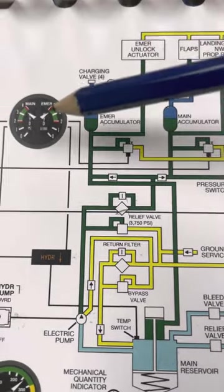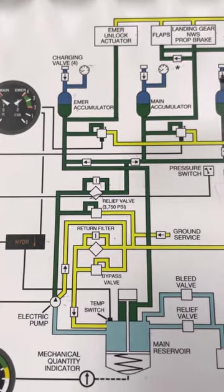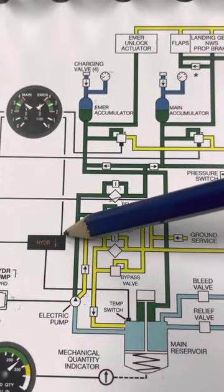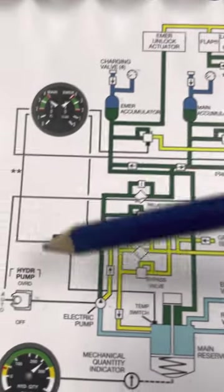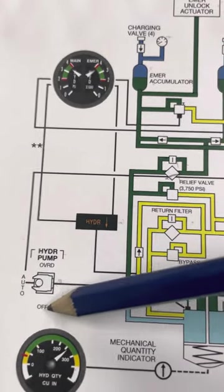Now, if we have an emergency with hydraulics, we have conditional memory items with the hydraulic memory items. First step, if you get a hydraulic lock down light, single chime, master caution, is to take the hydraulic switch and turn it to the off position. It then says check indicators.